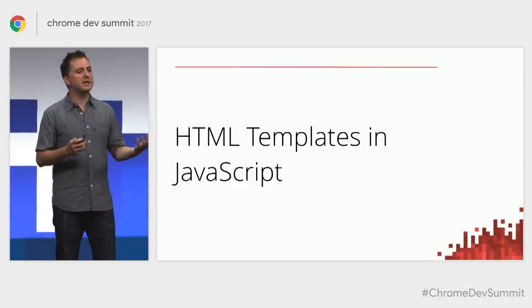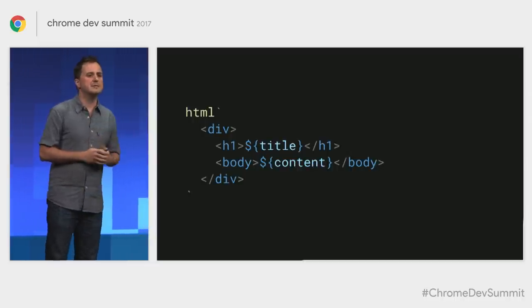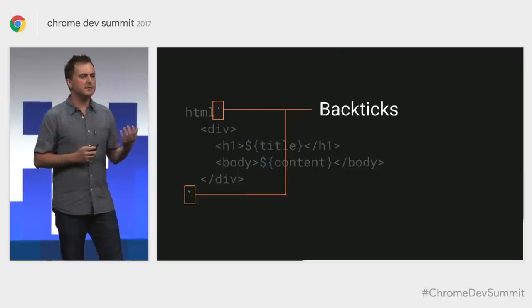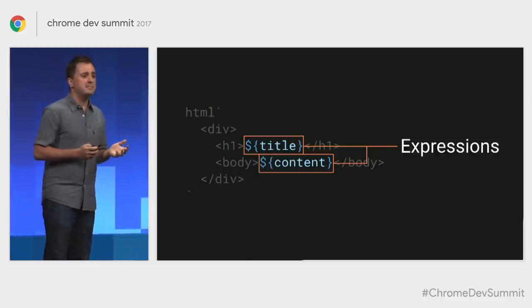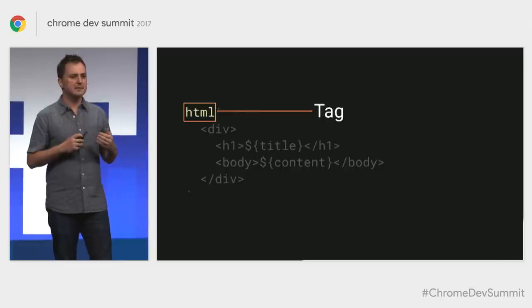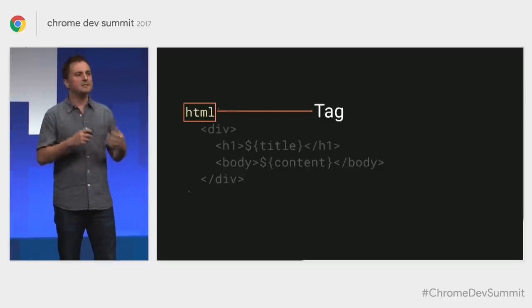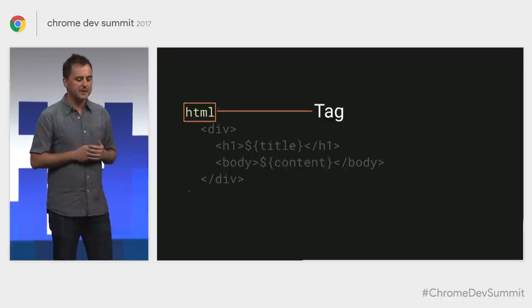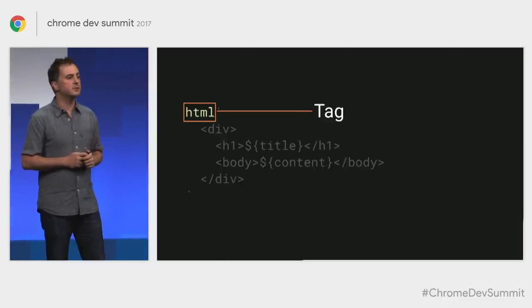A Lit HTML template uses a feature of ES6 called Tagged Template Literals, which is one of the most unsung features of ES6. It looks like a string, except we use backticks instead of quotes, it can span multiple lines, and it can have JavaScript expressions embedded directly into it. Template literals can be tagged — a tag is a special function that processes the template literal and the values from expressions. It doesn't have to return a string; it can return any type of value, and Lit HTML takes advantage of this to enable really fast updates.